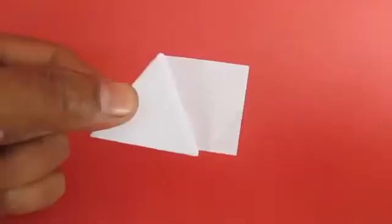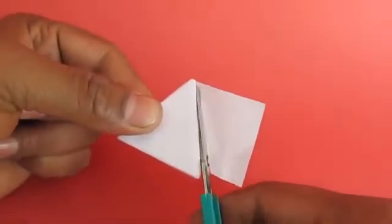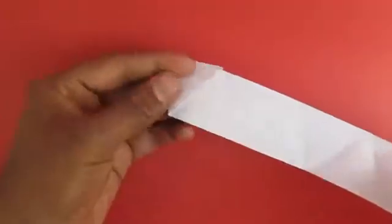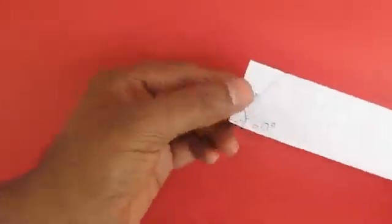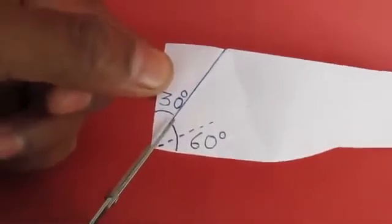Cut off the remaining part of the strip and the initial part, and now your strip will have 10 equal triangles.